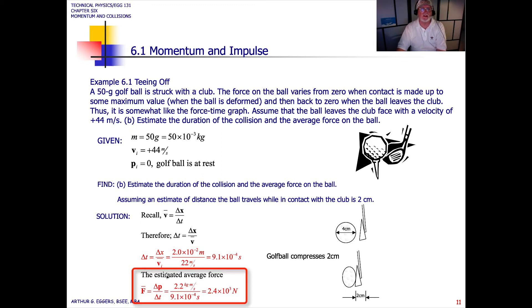The estimated average force then becomes delta p by delta t equals 2.2 kilogram meters per second divided by 9.1 times 10 to the minus 4th gives us 2.4 times 10 to the third newtons. We're looking at 2,400 newtons, kilogram meters per second squared of force for that ball shooting off of the face of the club.